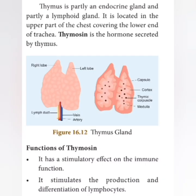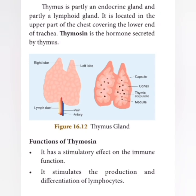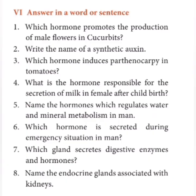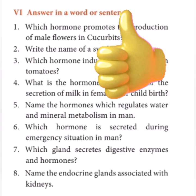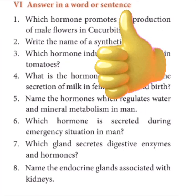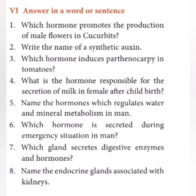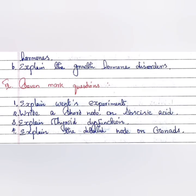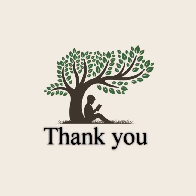The thymus gland diagram is also very important. The functions of thymosin may sometimes be asked in two-mark questions. Additionally, a book-back question: name the endocrine gland associated with the kidney — the answer is the adrenal gland. These questions may also be asked in the public exam in seven-mark or two-mark sections. Some additional two-mark questions have been added. I hope you can understand what I explained today.